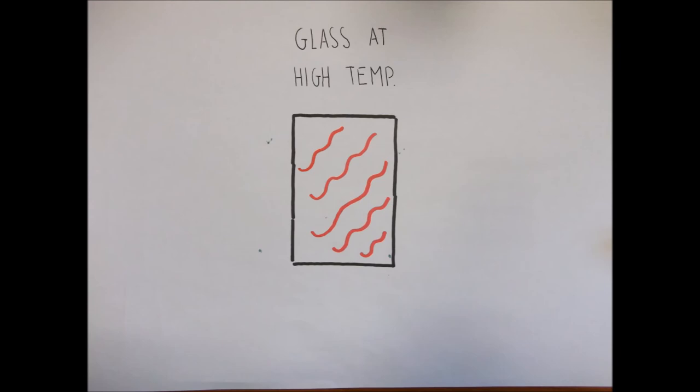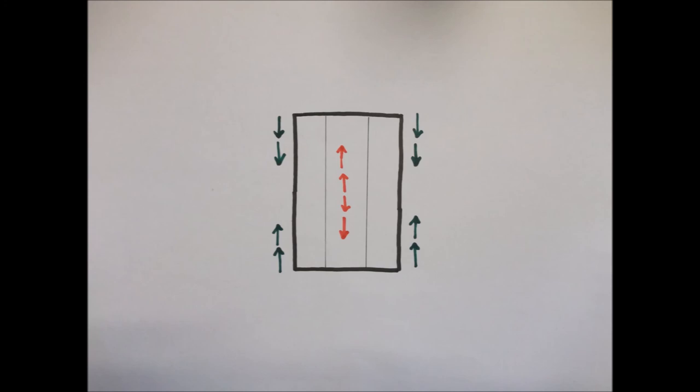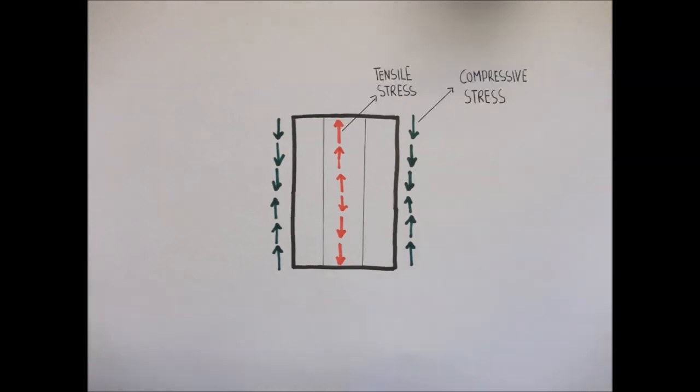Since the inner surface cools much slower than the outer surface, compressive stresses are created on the outside, which neutralize the tensile stresses inside the glass. This creates a finished product which can withstand nearly four times the pressure at which regular glass breaks.